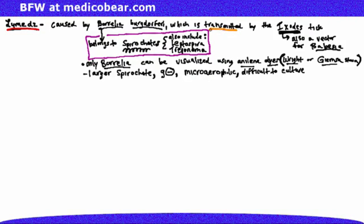It is transmitted by the Ixodes tick. More specifically, the examiner might bring up Ixodes scapularis. The reservoir, the organism where the Ixodes tick can be found on, is the white-tailed deer.